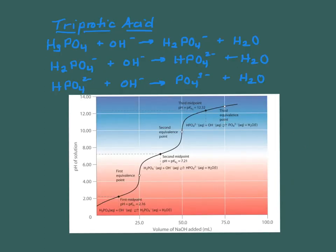For a triprotic acid, like phosphoric acid, you're going to see three equivalence points — here's one, here's two, and oddly enough, the last one is really hard to find. The ionization constant for that third reaction and the ionization of water are so close to each other that it gets a little lost. It's really hard to find this third equivalence point. We'll do this in the lab and see if we can find it.